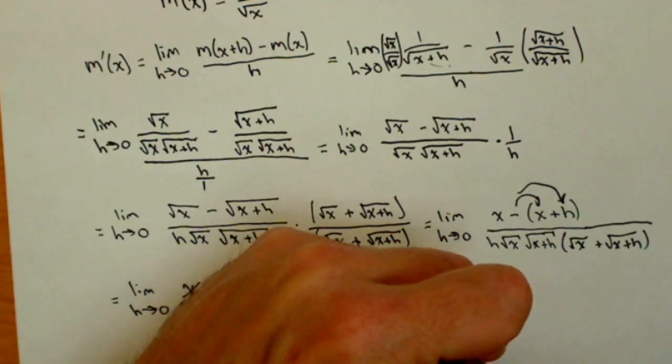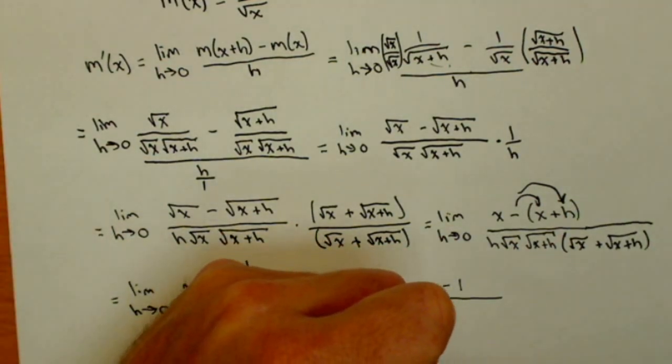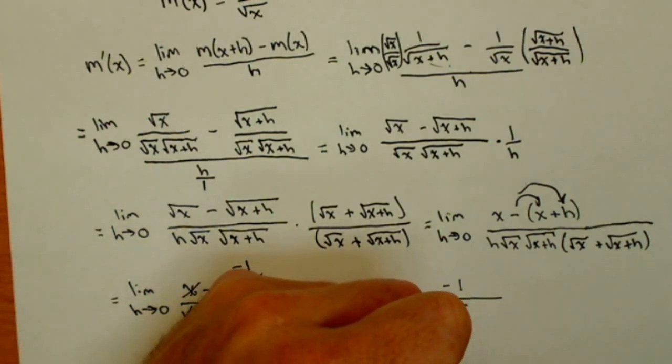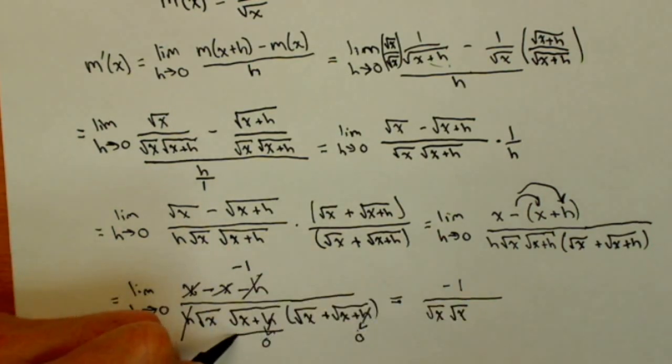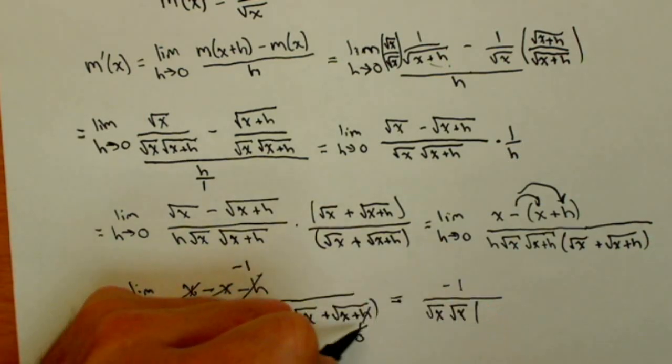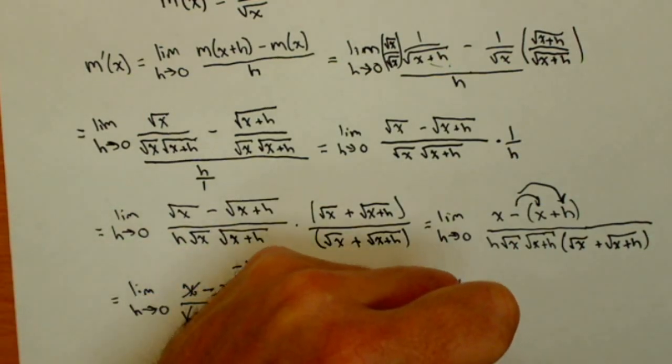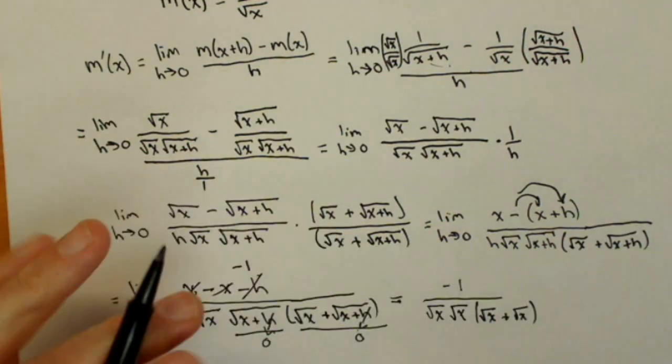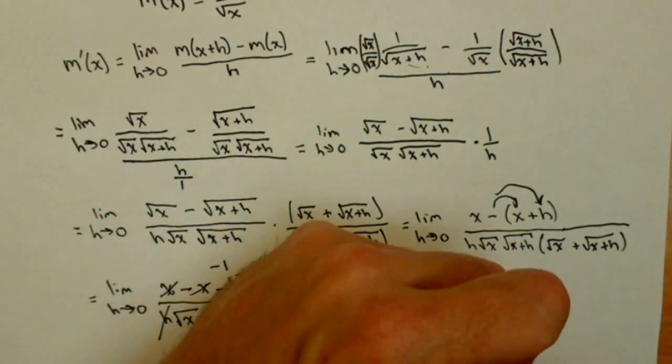So let's see what we have left. We have just a negative 1 on top. This is still square root of x. This is now just square root of x, this term here. This term here, in the parentheses, is square root of x plus just a square root of x. That's something that we can simplify.